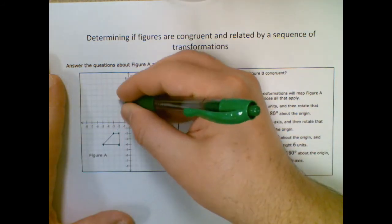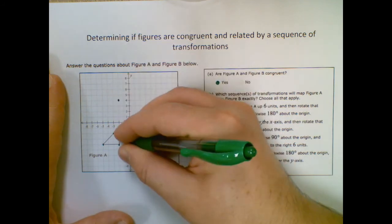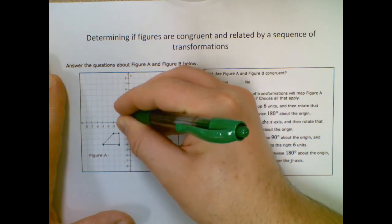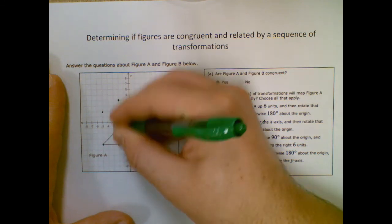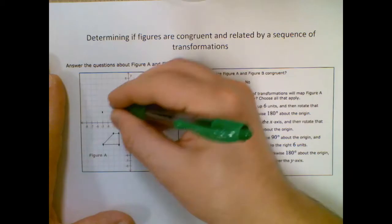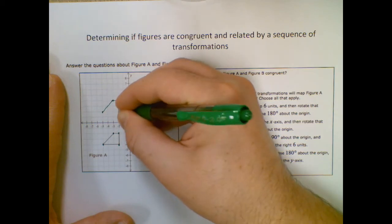And down here. So up six. One, two, three, four, five, six. Here. One, two, three, four, five, six. One, two, three, four, five, six. And one, two, three, four, five, six. Okay. So that's up six units.